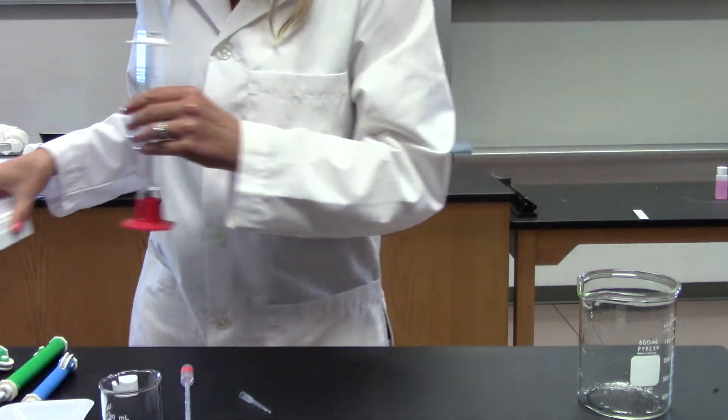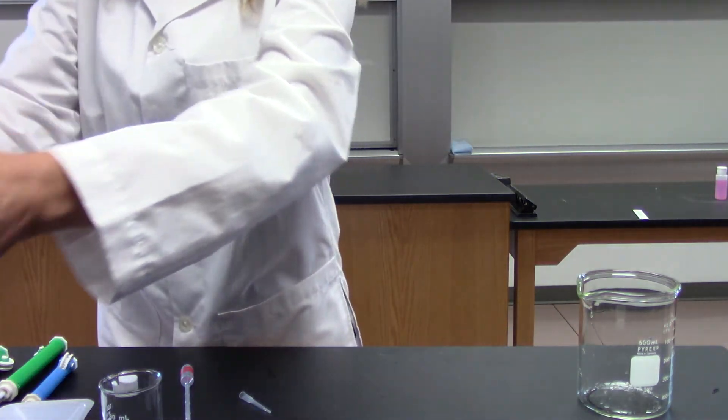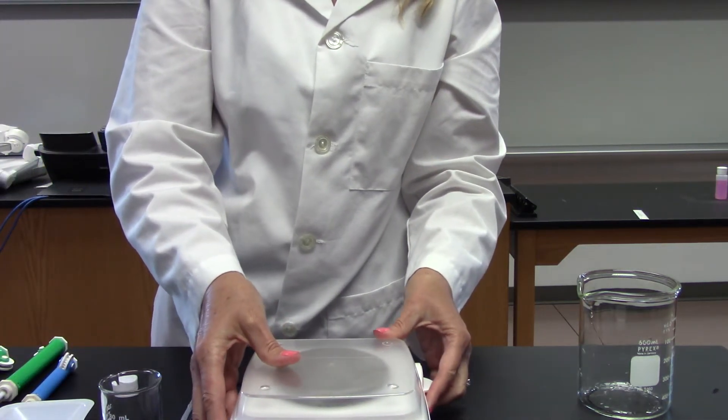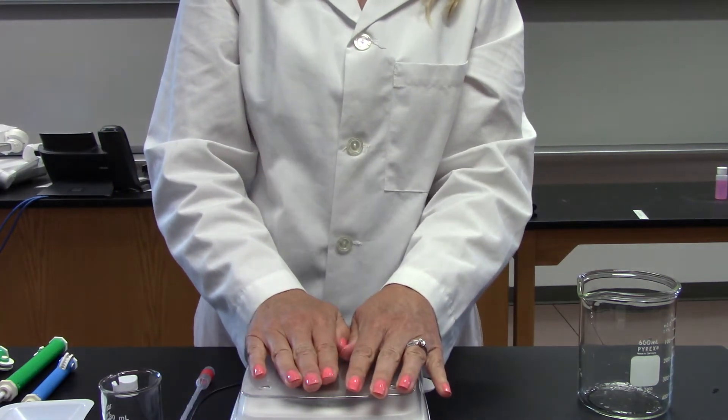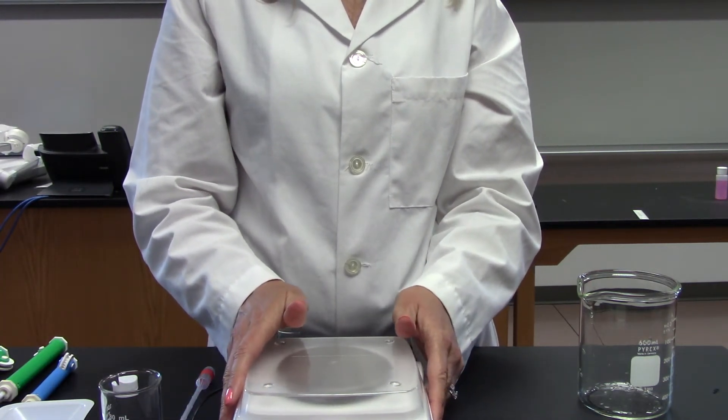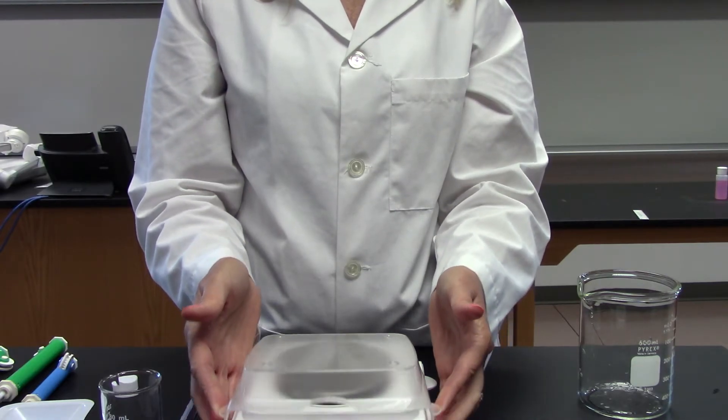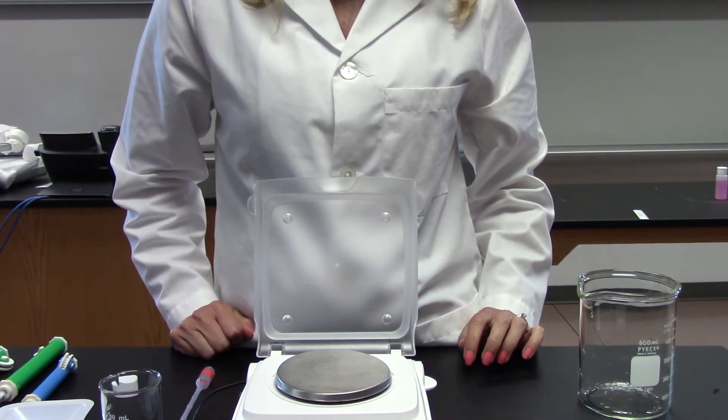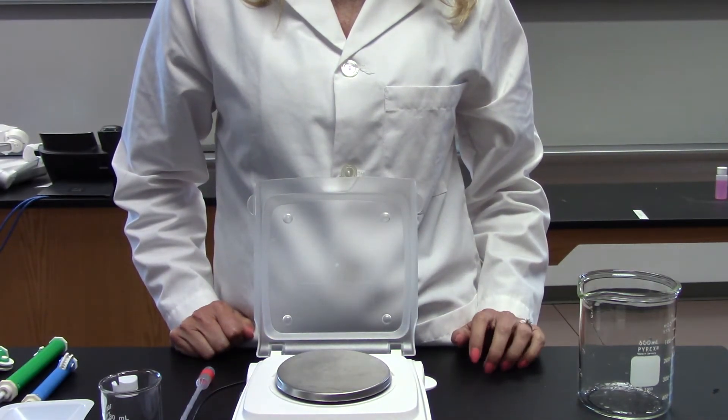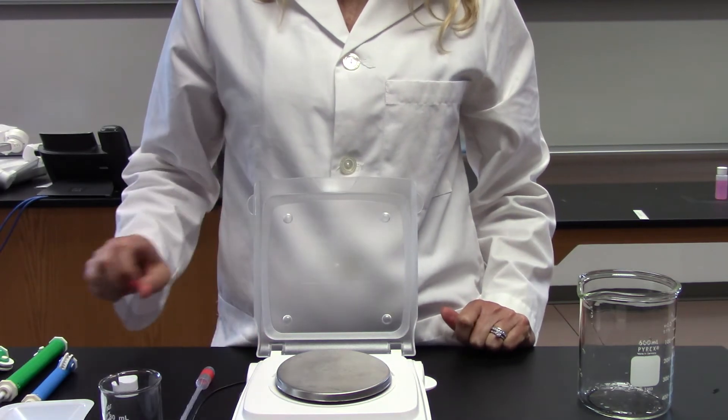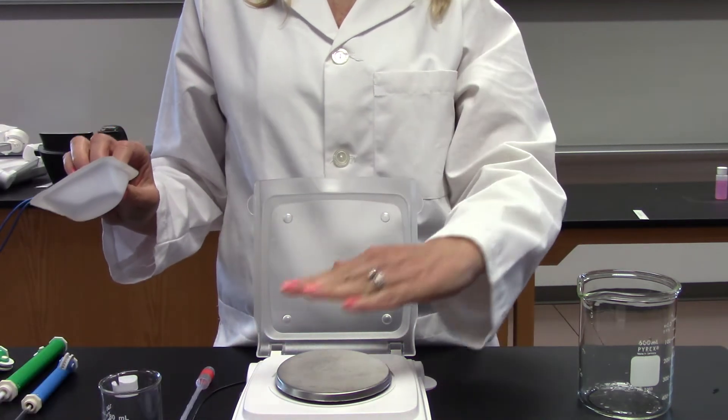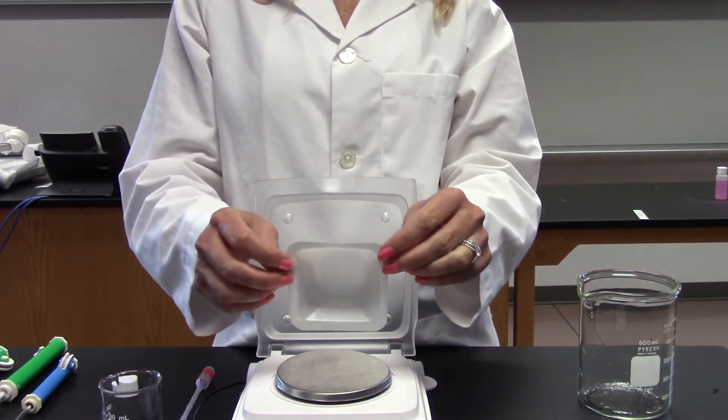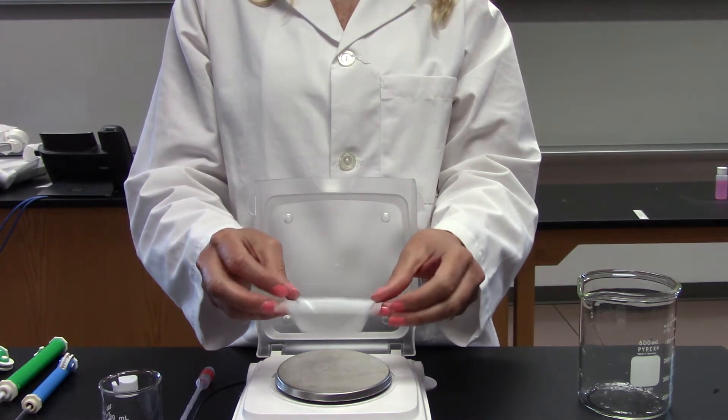For weight or mass, we use a scale or a balance in the lab. This one is pretty simple to use. You always want to make sure you lift the lid - oftentimes a student will say the scale's not working right, and it's because the lid is closed. So you want to open the lid, make sure the power is on, and make sure when the power is on that it says grams, because that's what we're measuring in. You also don't ever want to put anything directly on the scale. You'll always want to use something like a weighing boat or some other type of container.